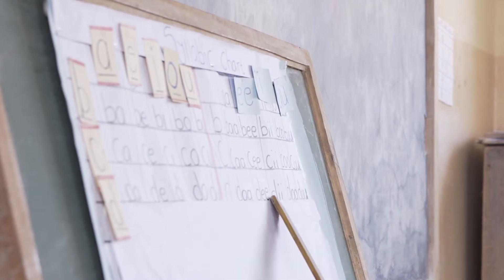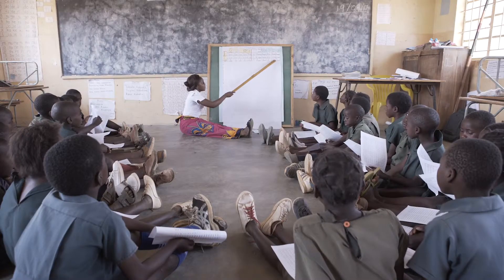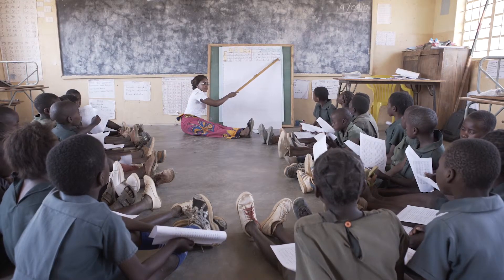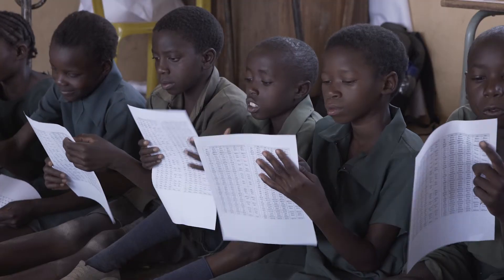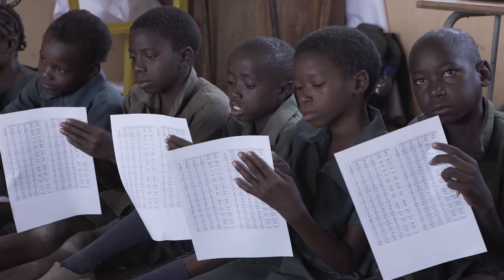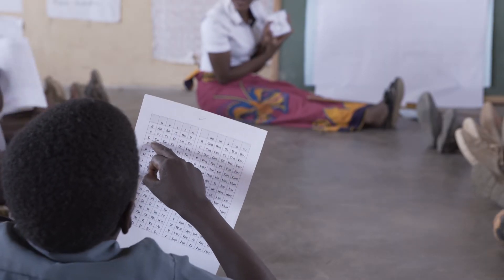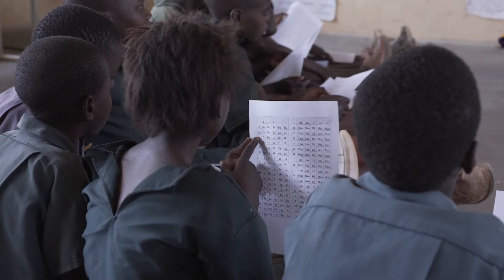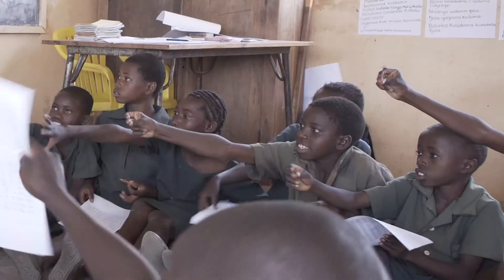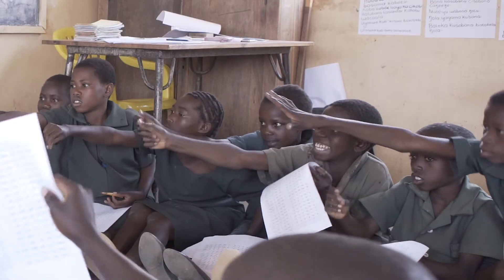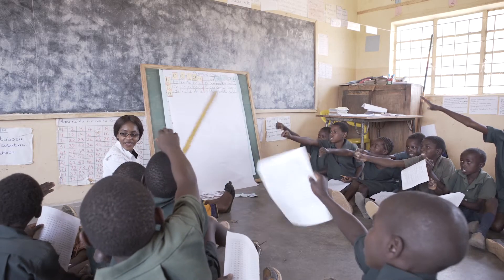Daily practice with a syllabic chart helps young learners to start recognizing letters and form their own words through active listening, speaking, and reading. These activities both inspire and equip children to read.